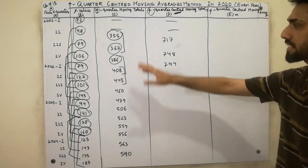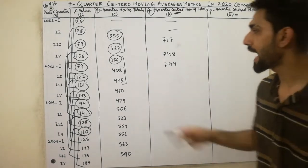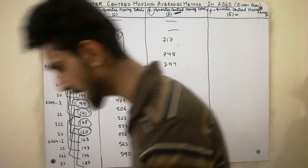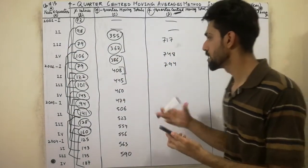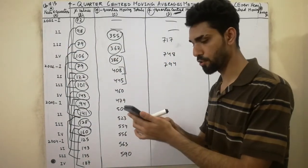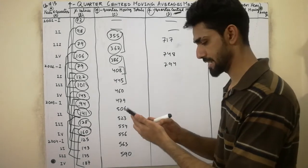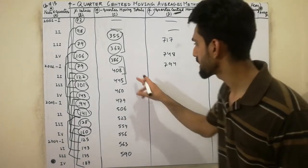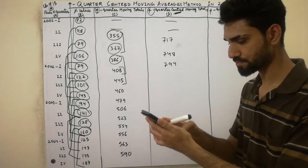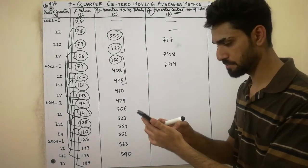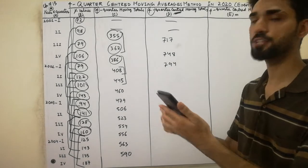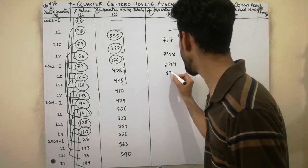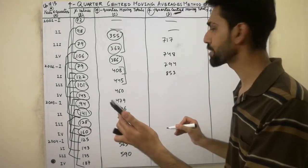First of all, I have done the initial calculations. Now we will add up the values: 408 plus 445. Adding 408 plus 445, we get the value 853. We write that value right in the center — 853 — as our first 4-quarter moving total.